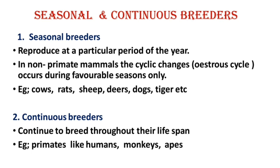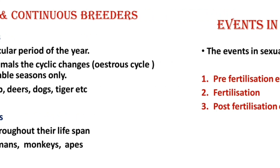For example, primates like humans, monkeys, and apes are continuous breeders. To correlate: seasonal breeders are non-primate mammals with the estrus cycle, while continuous breeders are primate mammals with the menstrual cycle.